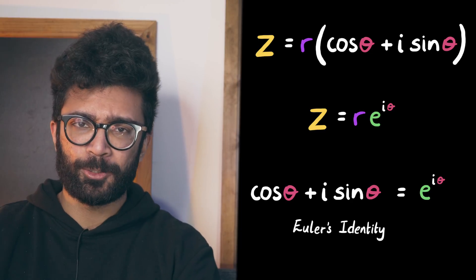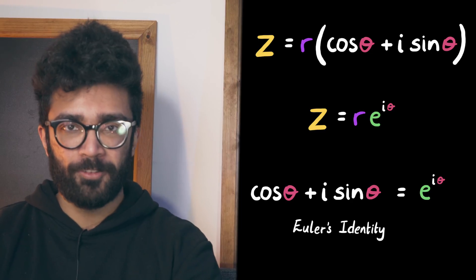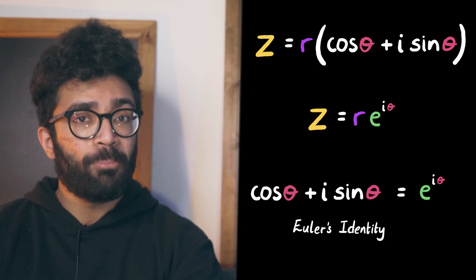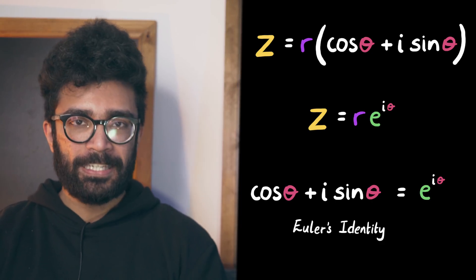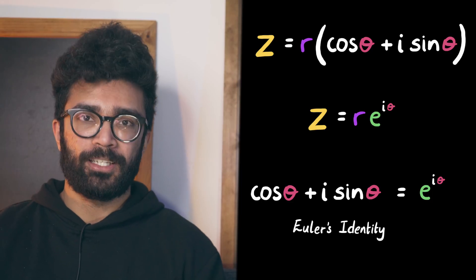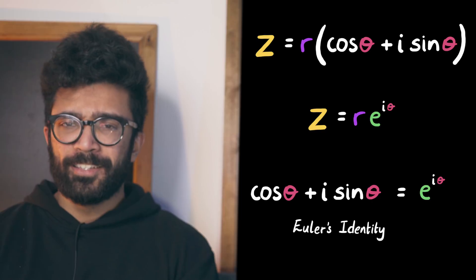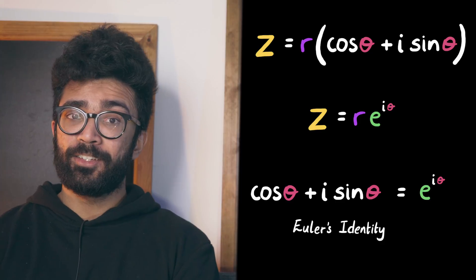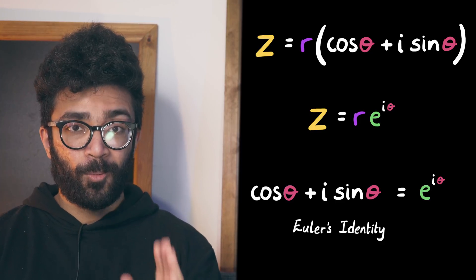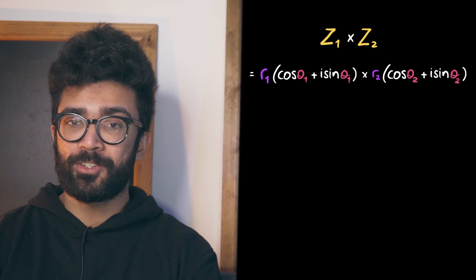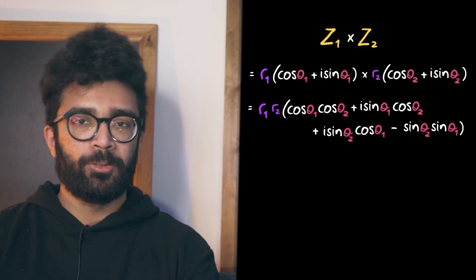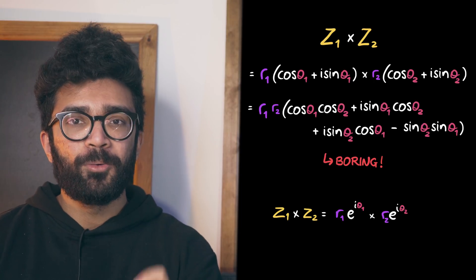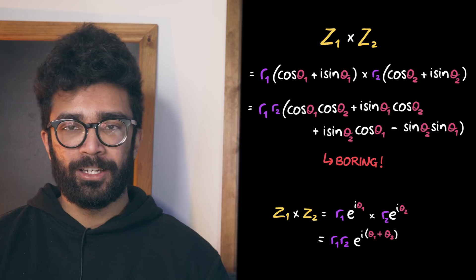The reality is a little bit more subtle, but I'll leave resources in the description below if you want to find out why this identity is true. For now, let's just assume it works. There are a couple of benefits: firstly, it's compact — it's shorter and easier to write e to the power of i theta rather than cos theta plus i sin theta every time. Secondly, when dealing with multiple complex numbers, it's easier to use the exponential notation. For example, when multiplying two complex numbers, using exponentials we simply add the exponents and get our result — much simpler.